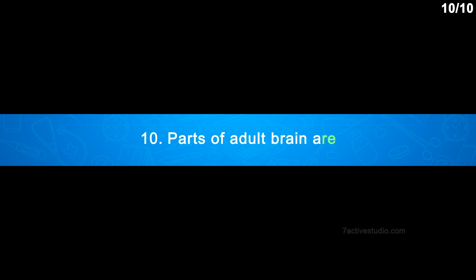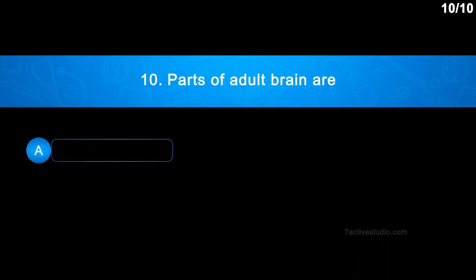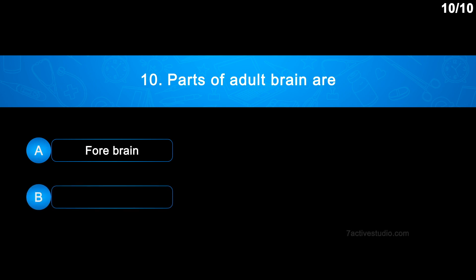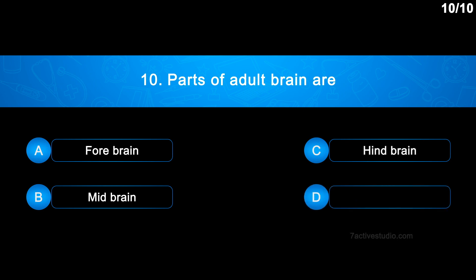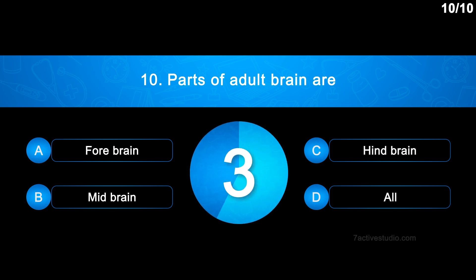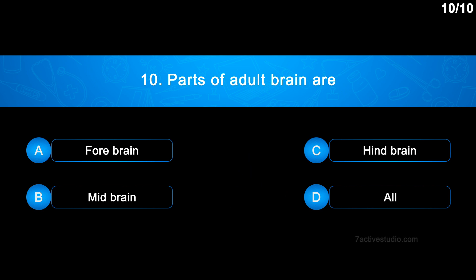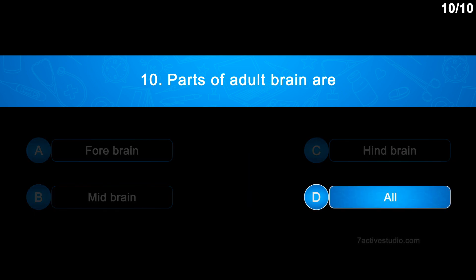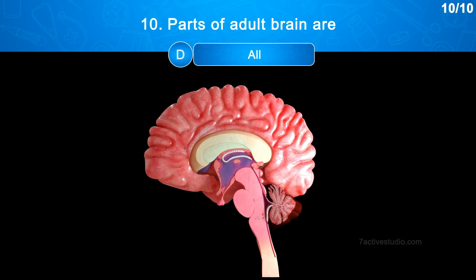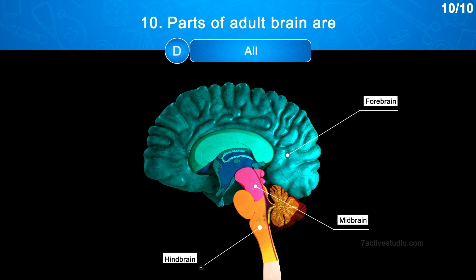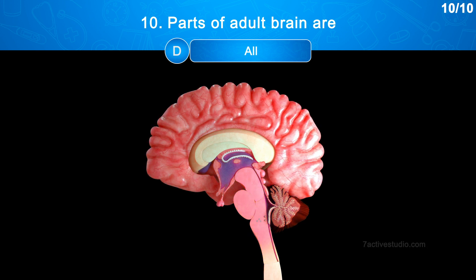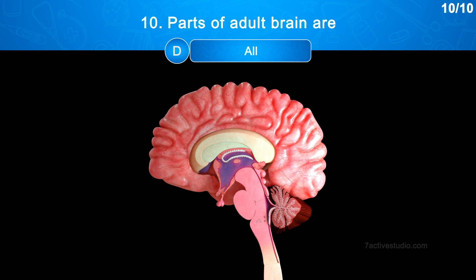Question No. 10: Parts of the adult brain are — Option A: Forebrain; Option B: Midbrain; Option C: Hindbrain; Option D: All. The correct answer is Option D: All. Forebrain, midbrain, and hindbrain are the three areas of the brain, constituting different parts of the brain. In the following videos we will go over everything in greater depth.